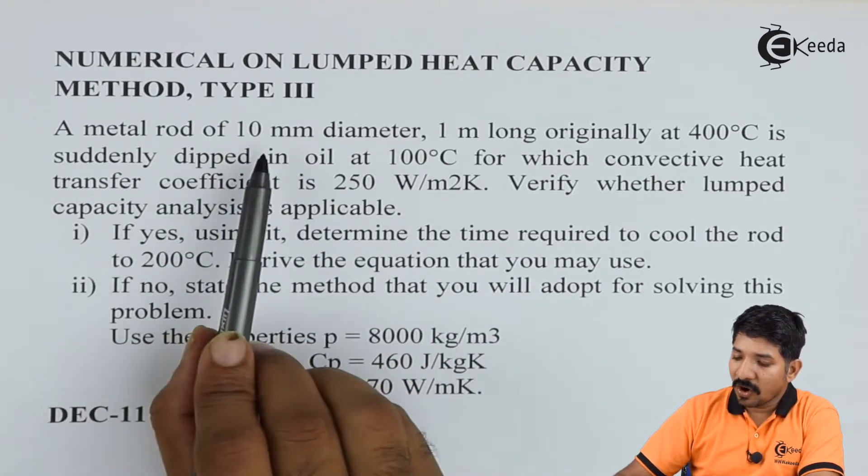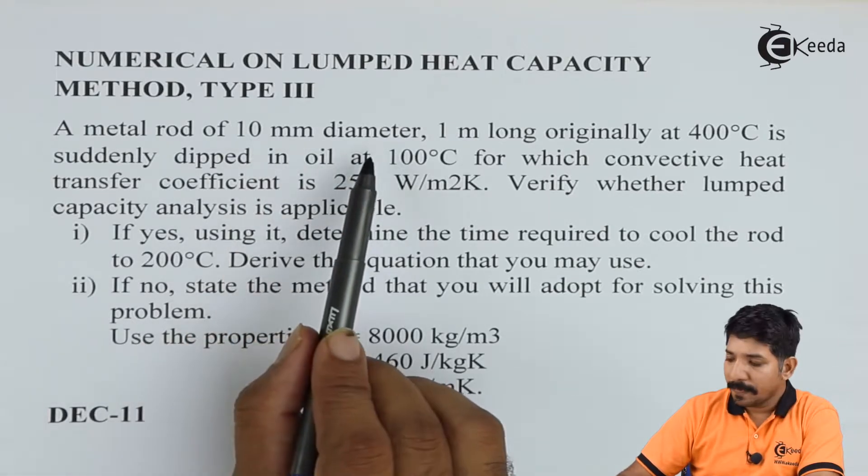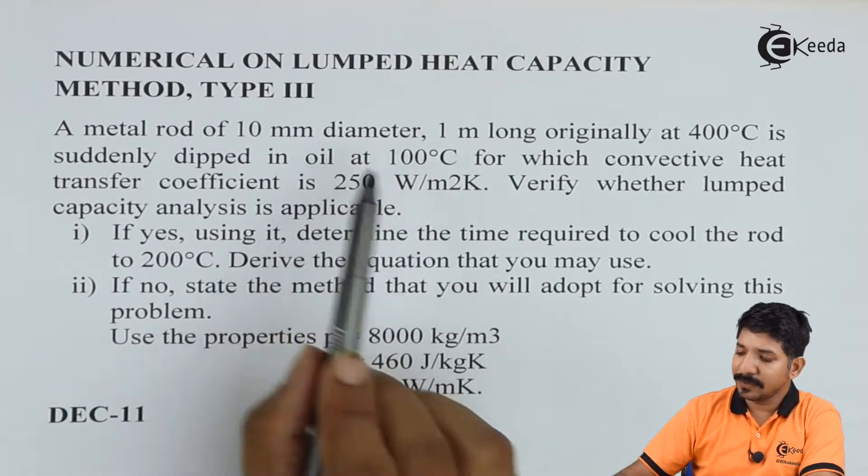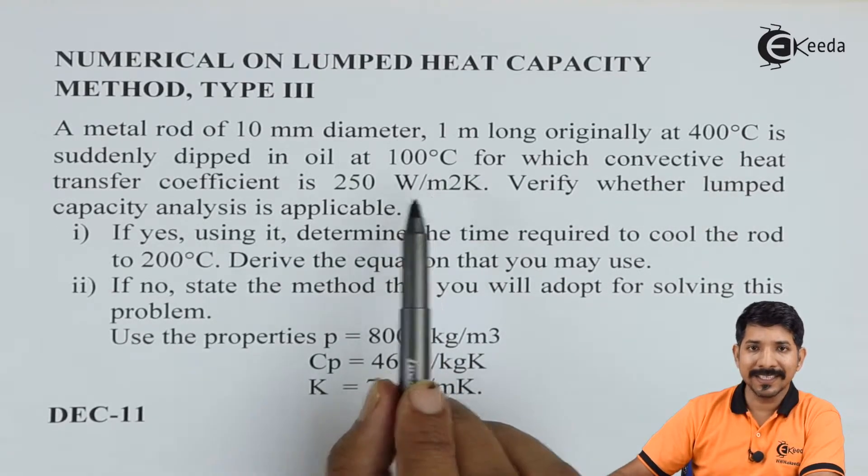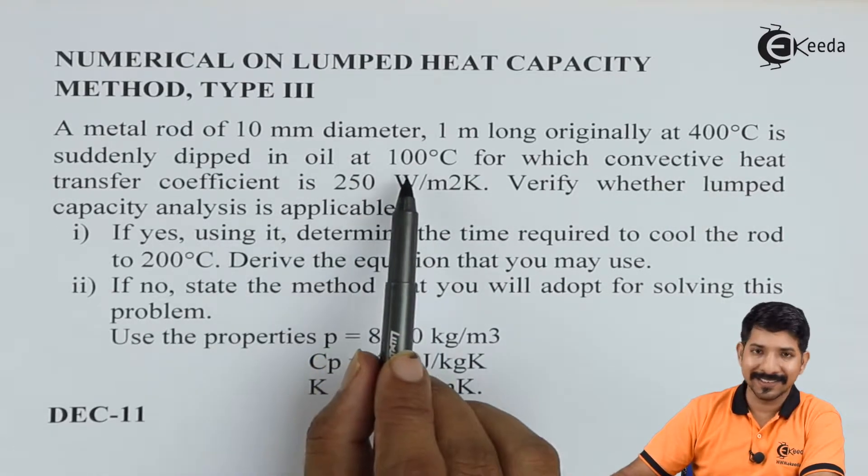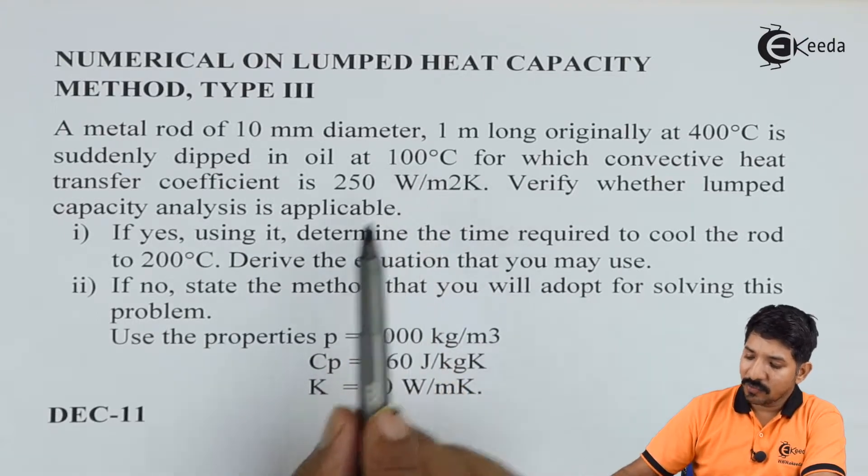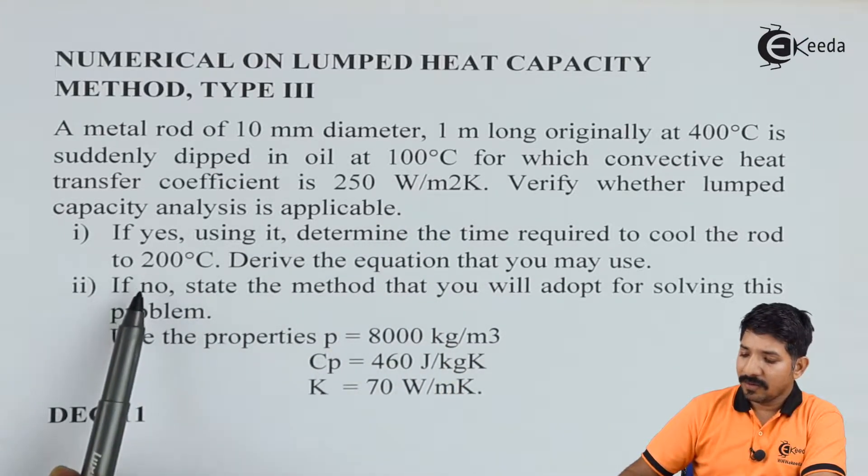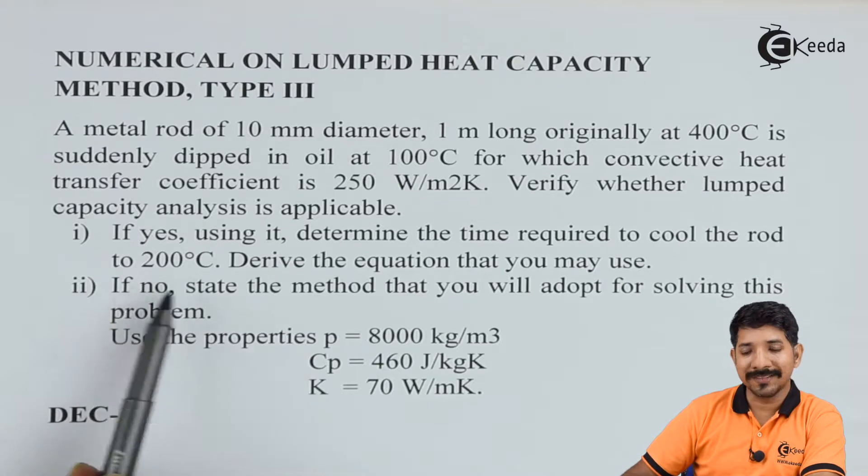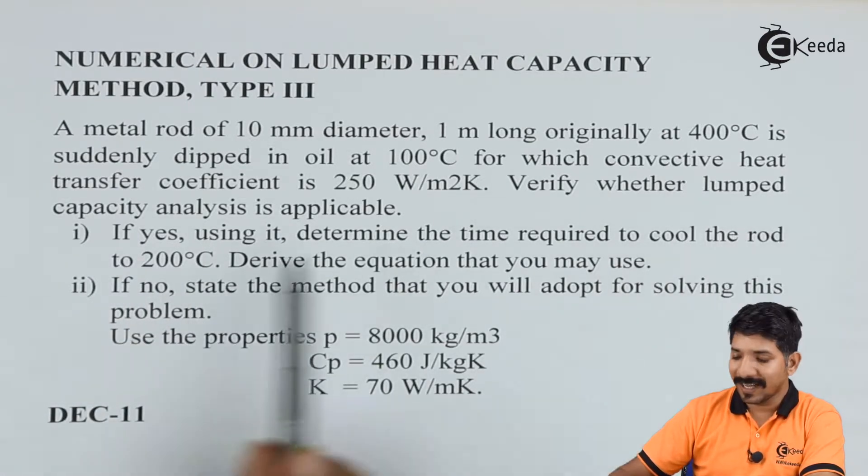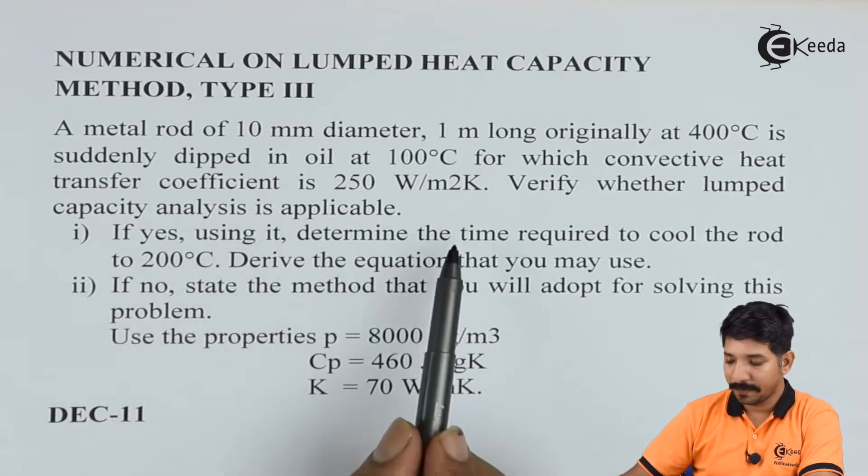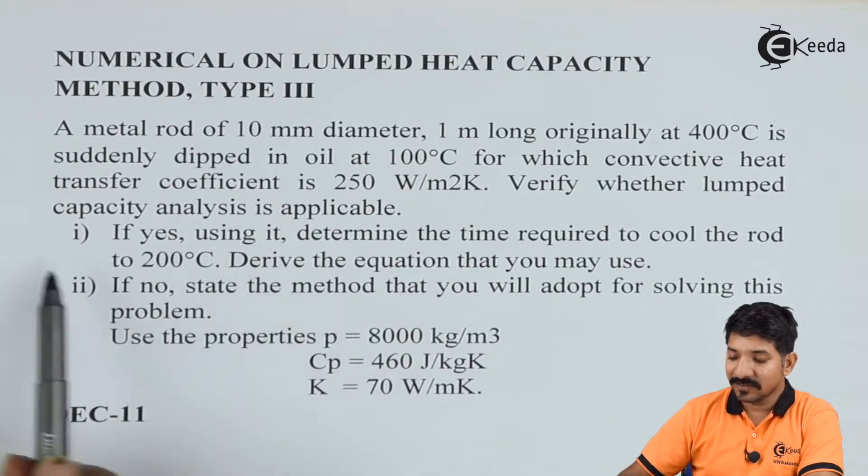They have taken a rod of 10 meter diameter and raised the temperature of the rod at 400 degree Celsius and suddenly cool it by placing it in an oil at 100 degree Celsius. They are asking us to find the time required for the rod to reach 200 degree Celsius, and to find out if the lumped heat capacity analysis is applicable or not. If yes, then solve this problem.